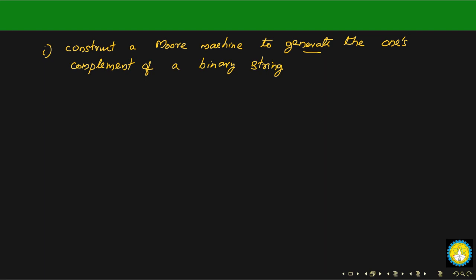We have already studied about the one's complement of a binary string in digital system design. Suppose you are given the binary string 1 1 0 0 1 — the one's complement is the inversion of this, meaning you invert all ones to zeros and zeros to ones. So the one's complement of this string is 0 0 1 1 0. Given this input, our machine should be able to generate this output.